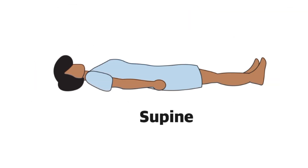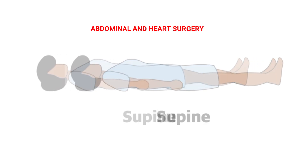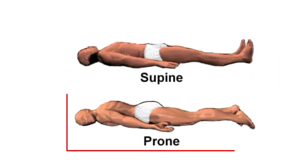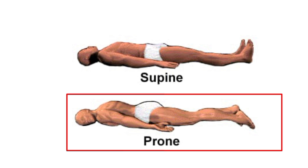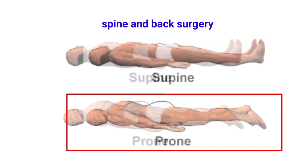1. Supine position: the patient lies flat on the back, commonly used for abdominal and heart surgeries. 2. Prone position: the patient lies on the stomach, face down, mostly for spine and back surgeries.